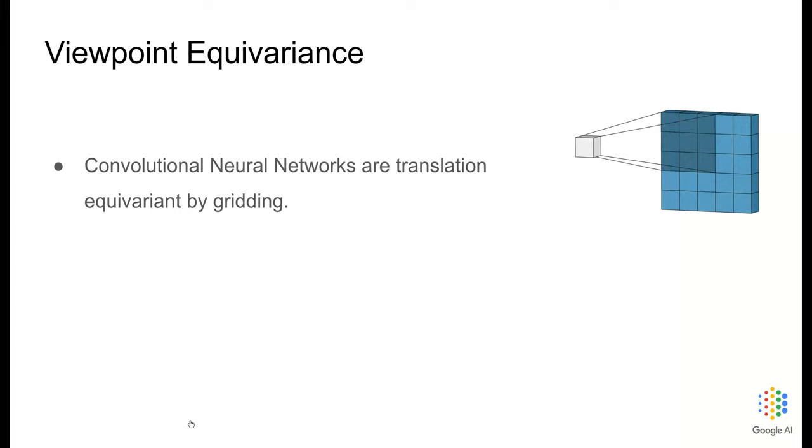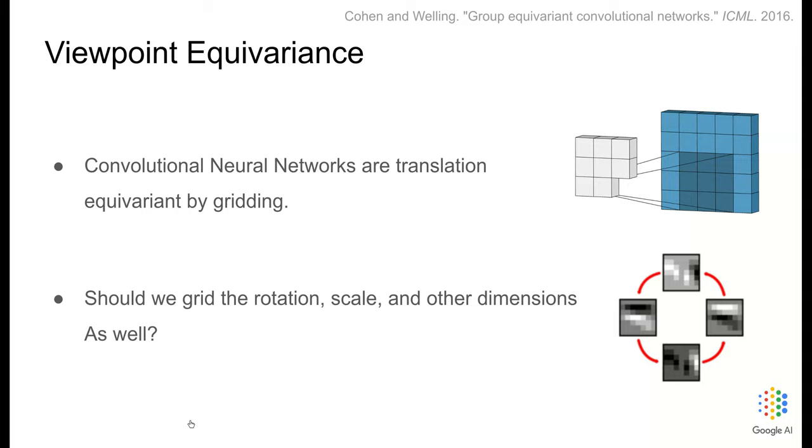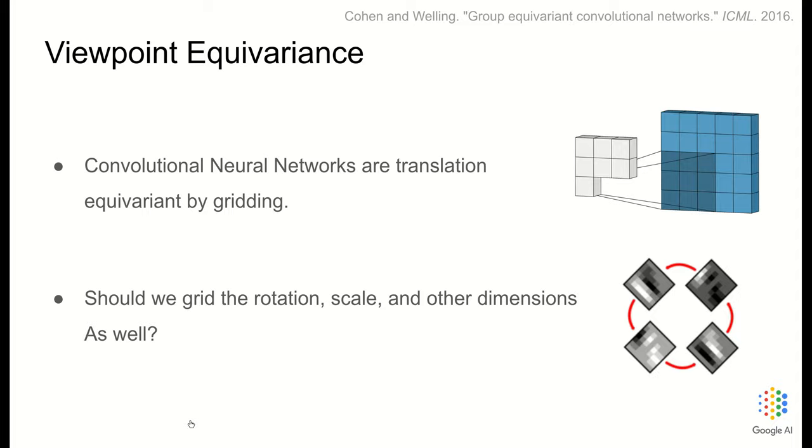The question is, should we stick to CNNs and grid all degrees of freedom in the viewpoint as well? Or should we, for example, find new basis functions and replicate filters or computations in a new basis? A proposed solution is capsule networks.